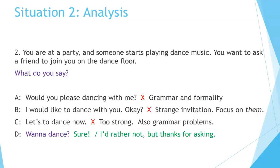What's wrong with the others? A. Would you please dancing with me? — The grammar is incorrect. 'Would you please dance?' would be better, but it's too formal for this situation. B. I would like to dance with you, okay? — That's a strange invitation. Don't focus on yourself — focus on the other person. C. Let's to dance now. — This is too strong, and there are grammar problems. We don't say 'Let's to dance.' It's better to say 'Let's dance.'